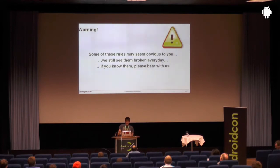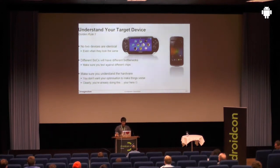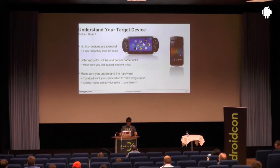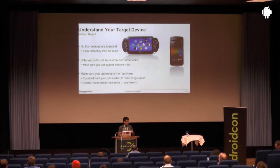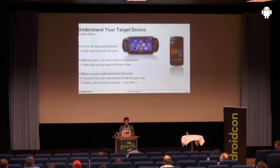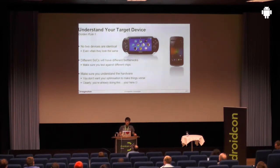Golden rule number one: understand your target device. It's a bit tricky. Not all phones are the same even if they have the same name. For example, the Galaxy S2 has a Mali device, a Tegra device, and a PowerVR device — it's seriously crazy. The Galaxy S4 has a PowerVR device and an Adreno device. The same goes for plenty of other devices that have two versions. So sometimes it's good to query the GL renderer string to know which GPU vendor you're on, especially for optimizations that may completely not work on some architectures but work really well on others.